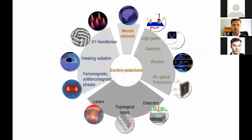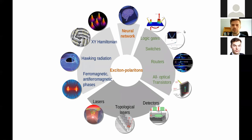The simplest proper description of polaritons uses a Hamiltonian including an excitonic component with bosonic operator, a photonic component with bosonic operator, and a quantum coupling term representing creation of an exciton and annihilation of a photon, or vice versa. This Hamiltonian can be diagonalized to find mixed exciton-photon states, yielding two new branches — lower polaritons and upper polaritons — with an anti-crossing dispersion. The photon in the cavity has an unusual parabolic dispersion due to confinement, giving it an effective mass.